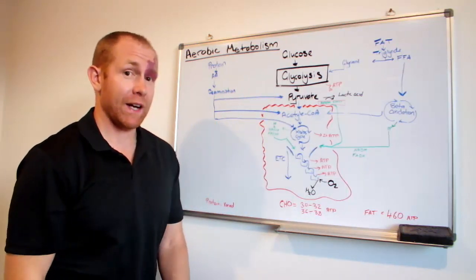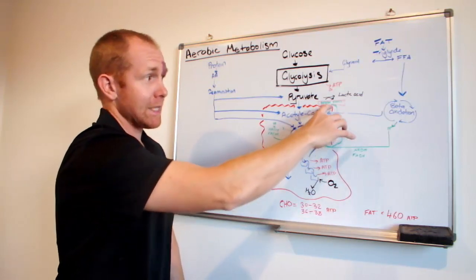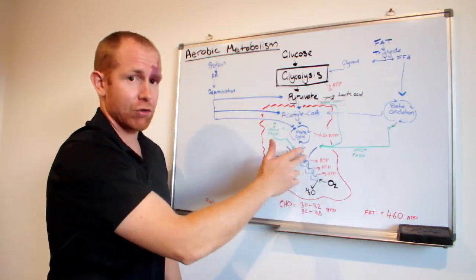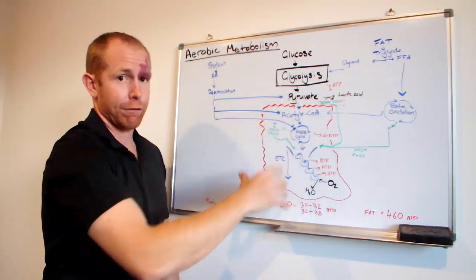But if there is oxygen available, what happens is that the hydrogen ion is picked up by NAD, making it NADH, and it comes down and enters the electron transport chain. Lactic acid is never produced. Pyruvate can flow down into the mitochondria.